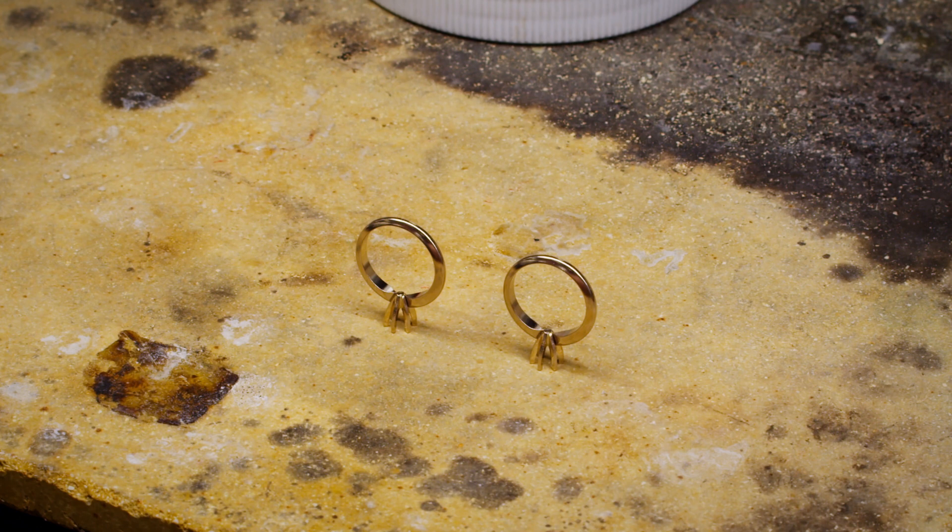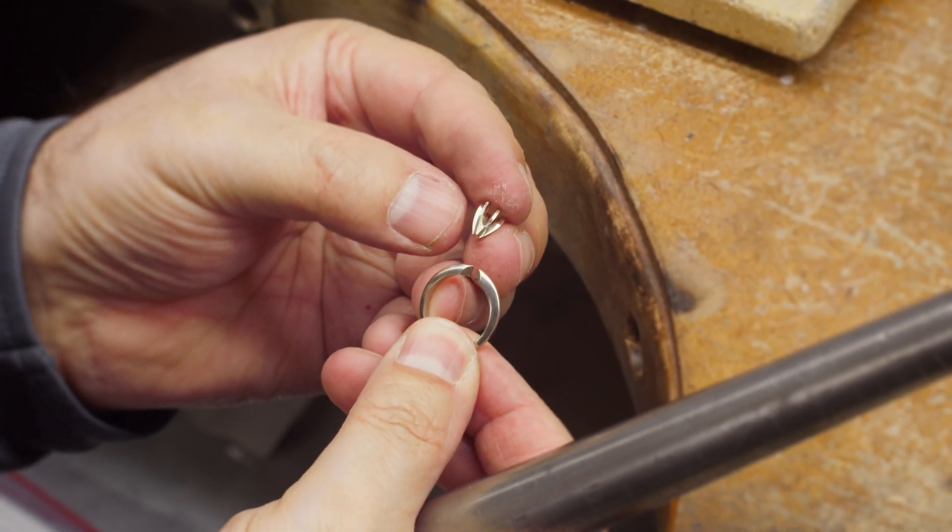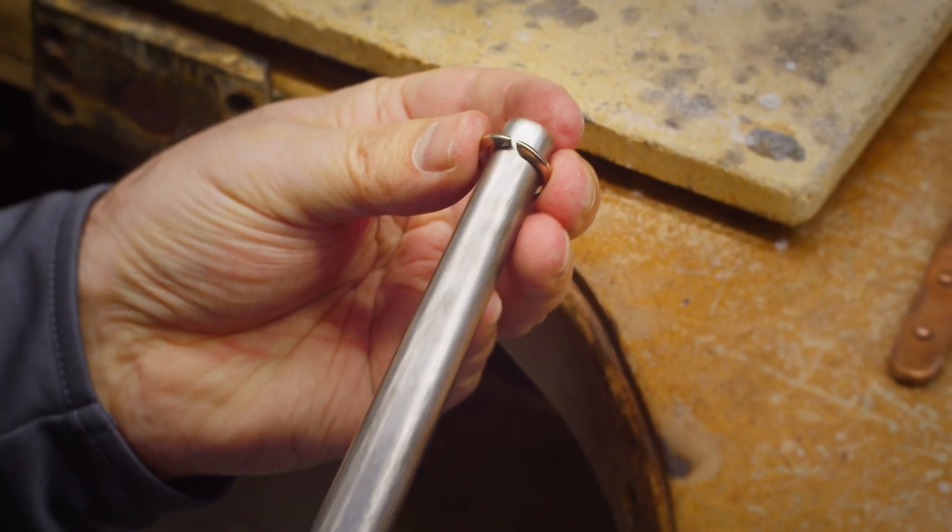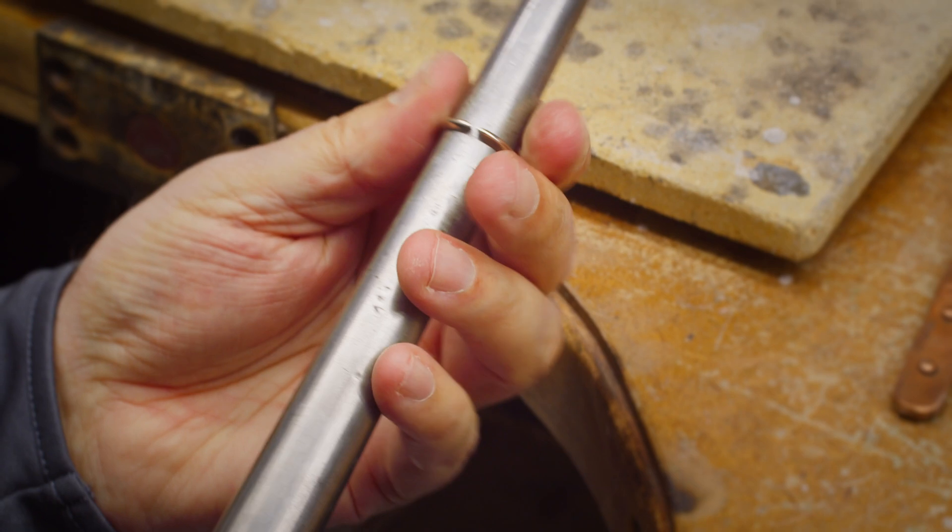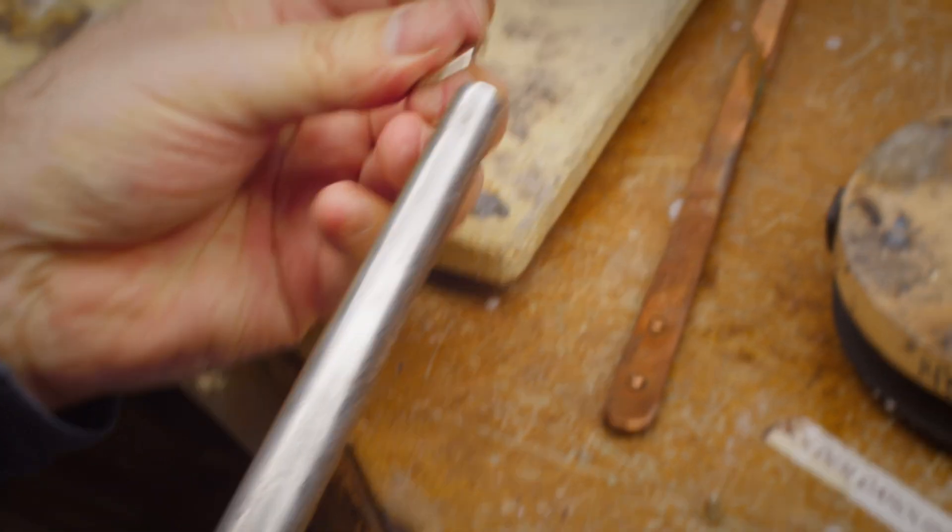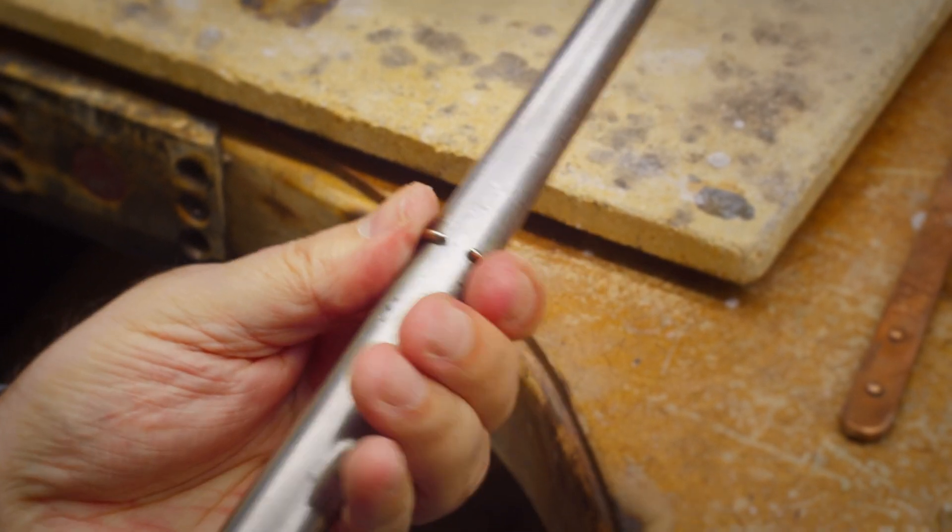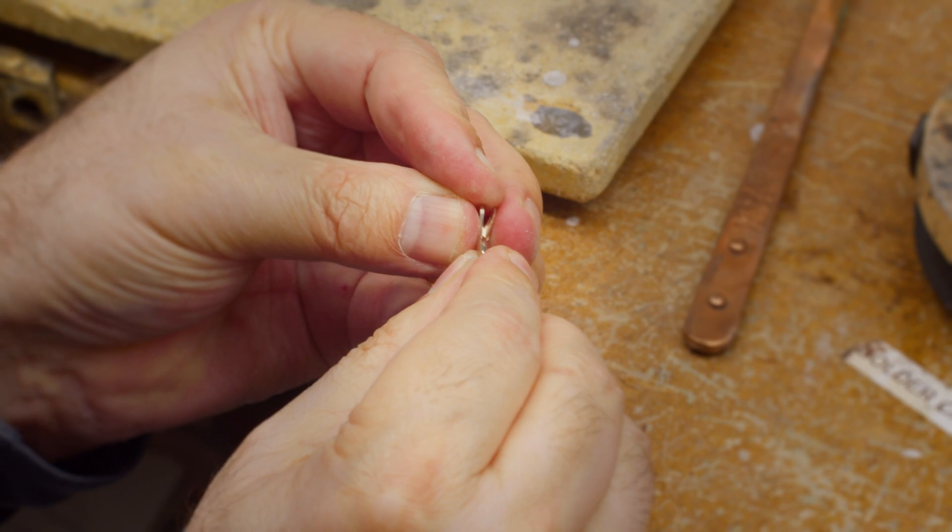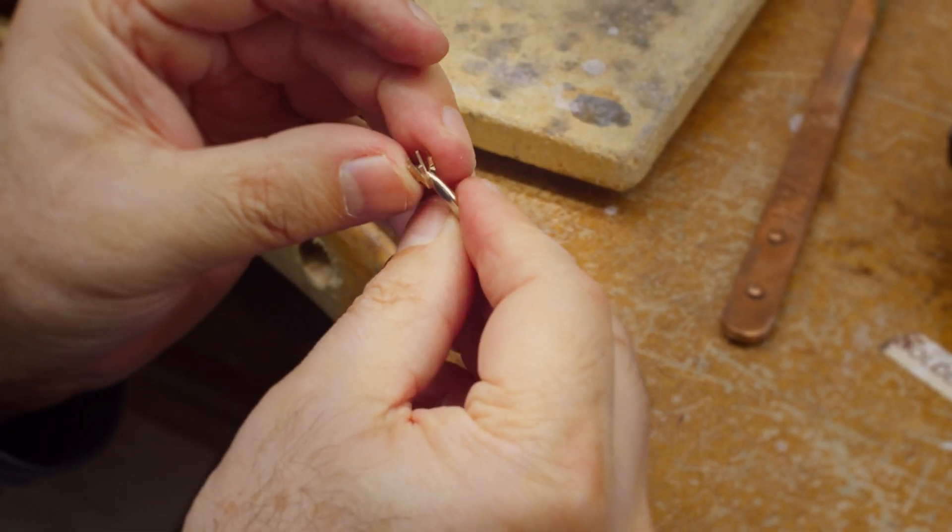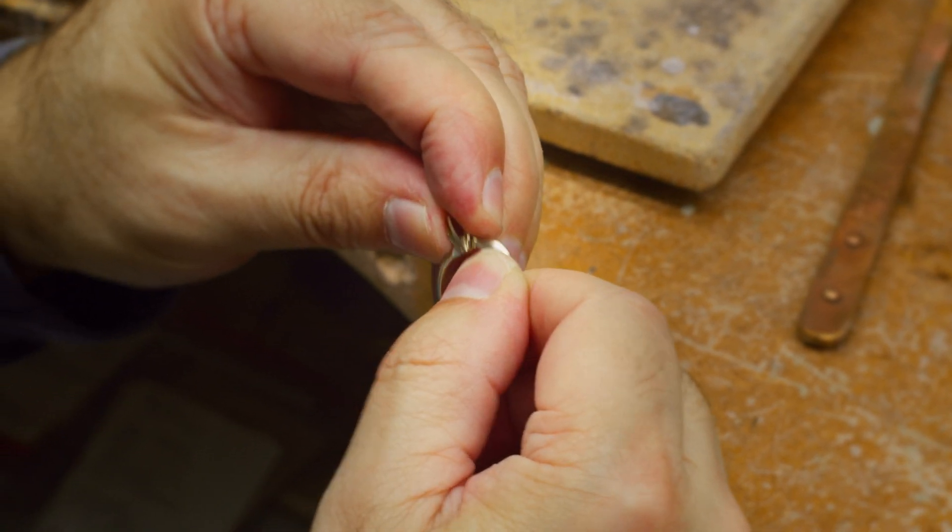In this example, I'm going to show you how to assemble a six prong head to a shank with solder. One of the things I like to do is to open up my shank. So I put it on a ring mandrel and open it just a little bit because I don't want so much tension on the head and the shank that it might break. If you go a little too far, just close it up a little bit, and the head fits really nice.